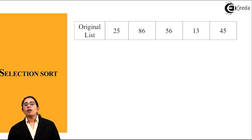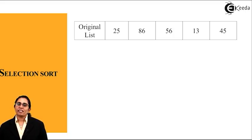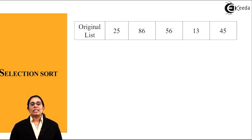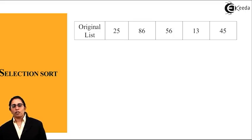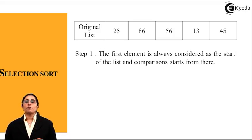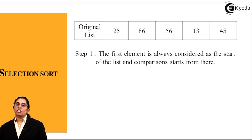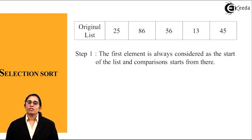Now we will see how selection sort actually works. We have an original list of 5 numbers: 25, 86, 56, 13, and 45. This is an unsorted list. We have to sort it using selection sort. The first element is always considered as the start of the list and comparison starts from there, so 25 is considered the minimum initially.